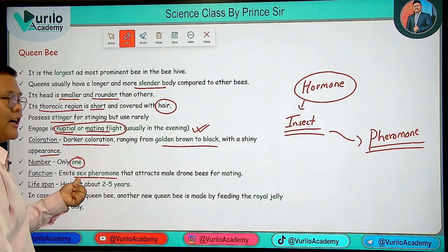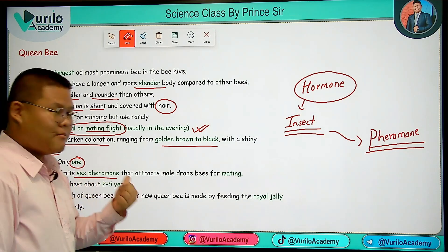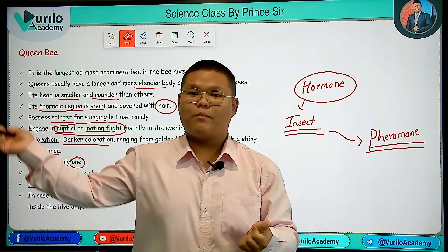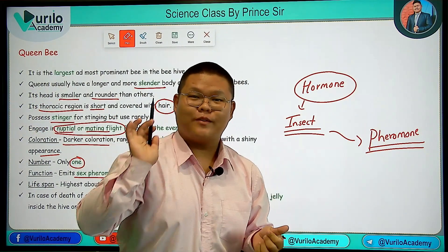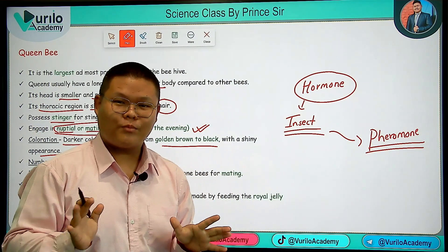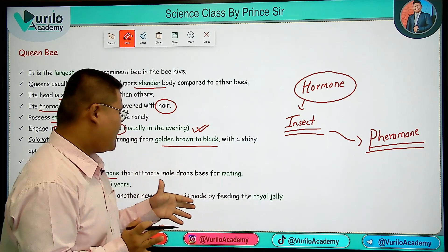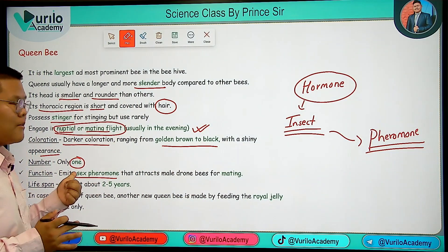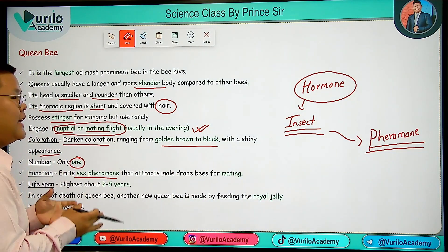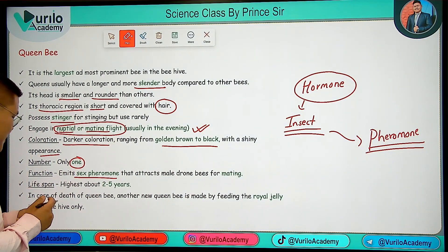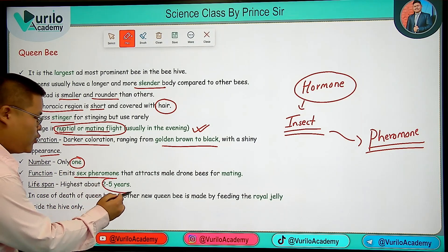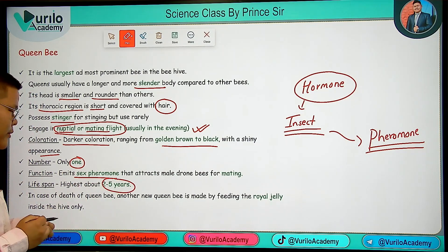This sex pheromone emitted by the Queen Bee attracts the male Drone Bee. The life span of a Queen Bee is 2 years.